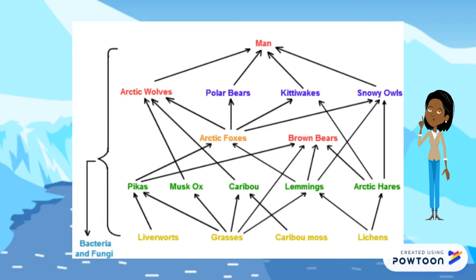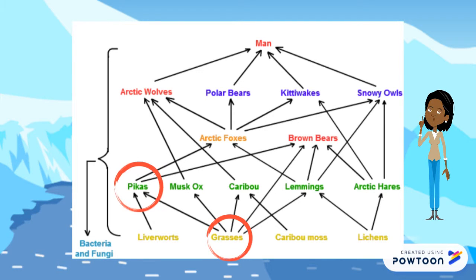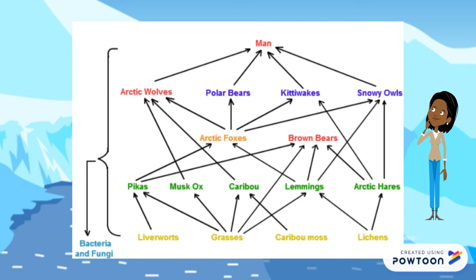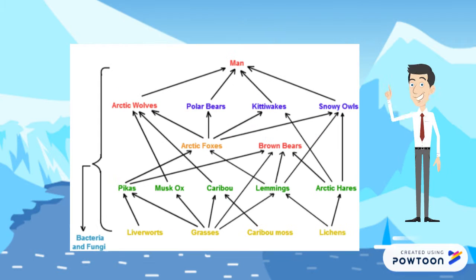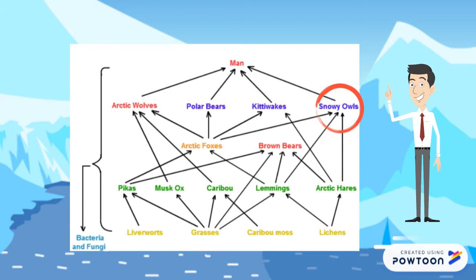As you can see, these are some food chains. I'm going to explain two of them. The first one is grasses, pikas, and brown bears. And the other one is lichen, lemmings, Arctic foxes, and polar bears. This is a food network of the polar desert. An example is lichen, Arctic hare, and snowy owls.